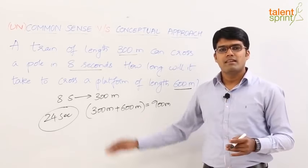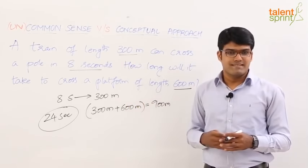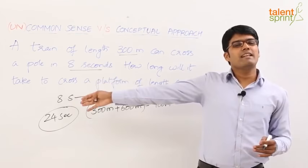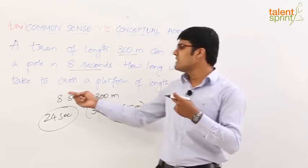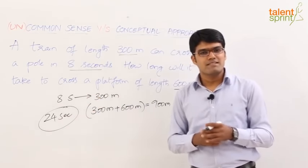The simple point here is time is proportional to distance. So 300 meters can be covered in 8 seconds. 900 meters is 3 times this distance. 3 into 300 is 900, so 3 into 8, 24 seconds is your answer.